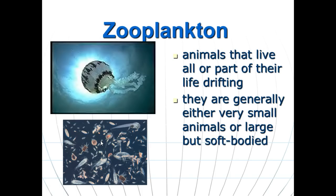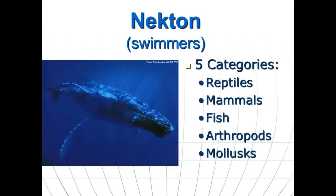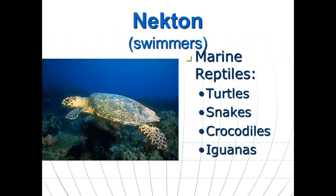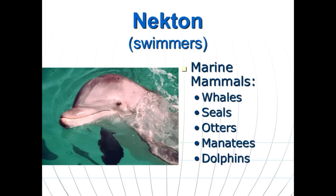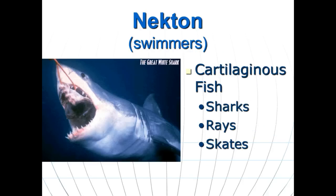Necton are swimmers — any organism that actively swims in the ocean, not just fish but also reptiles and mammals. If you go in the ocean and swim around, you'd be considered necton. They can maneuver through different parts of the water column, from the sunlit zone all the way down to the ocean floor. Examples include reptiles like turtles, snakes, crocodiles, and iguanas; mammals like whales, seals, otters, manatees, and dolphins; and fish including cartilaginous fish like sharks, rays, and skates.